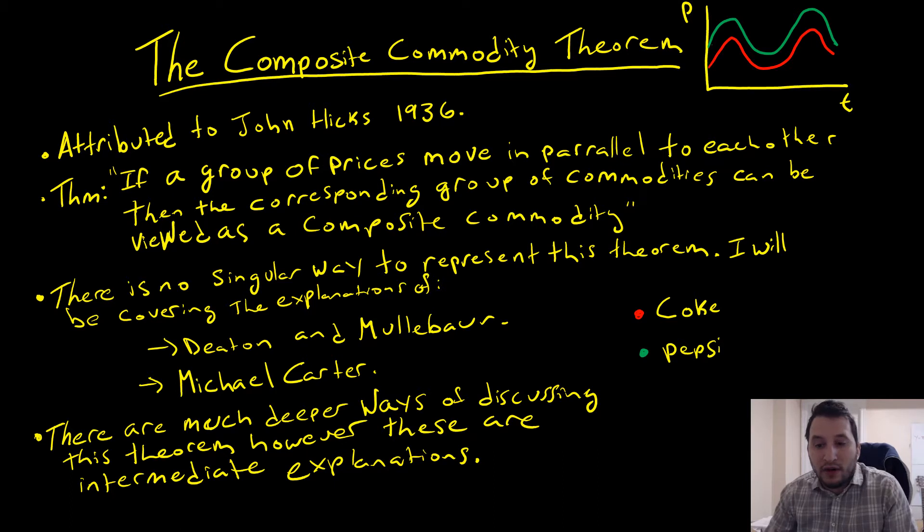So if we have two prices, that being Coke and Pepsi, given by this graph here, and their fluctuations are moved together, we can construct a composite index out of these prices.